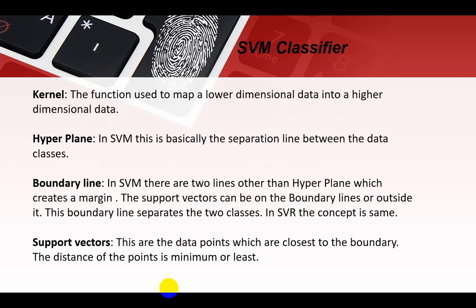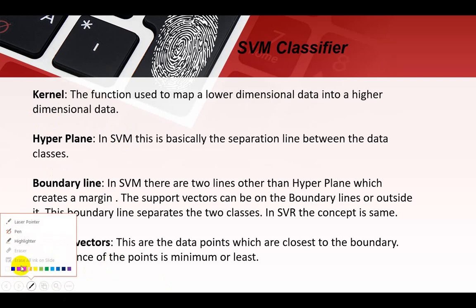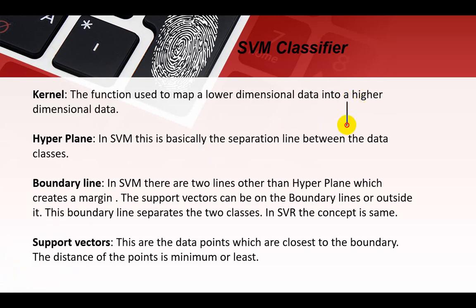First, we will discuss the kernel. Kernel is a function which is used to map lower dimension data into high dimension data. We will study the kernel support vector in a separate session to fully understand the definition of kernel. For now, we assume that the kernel converts lower dimension data into high dimension data. You can see that a dataset which is on the X-axis, after applying the kernel, this dataset moves and can then be divided.